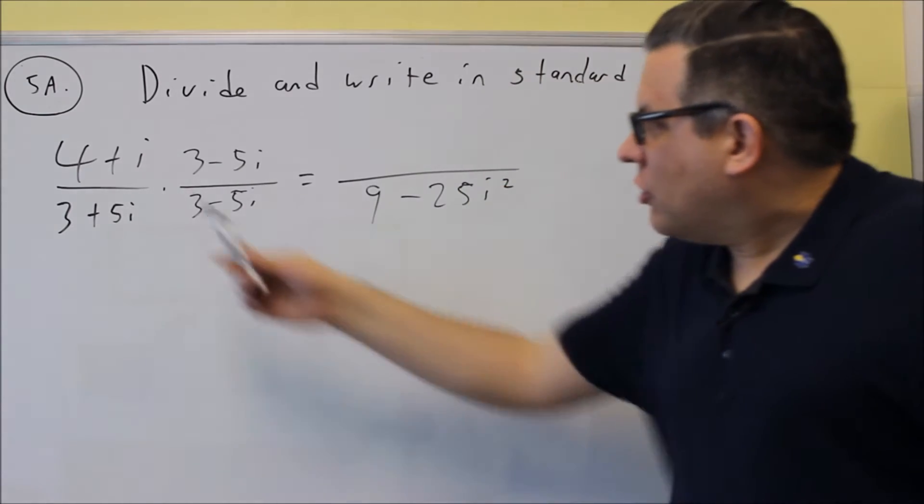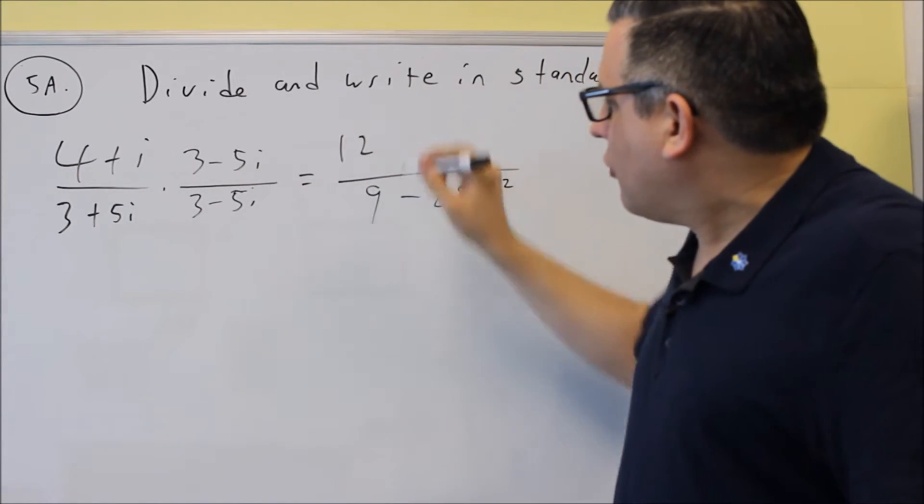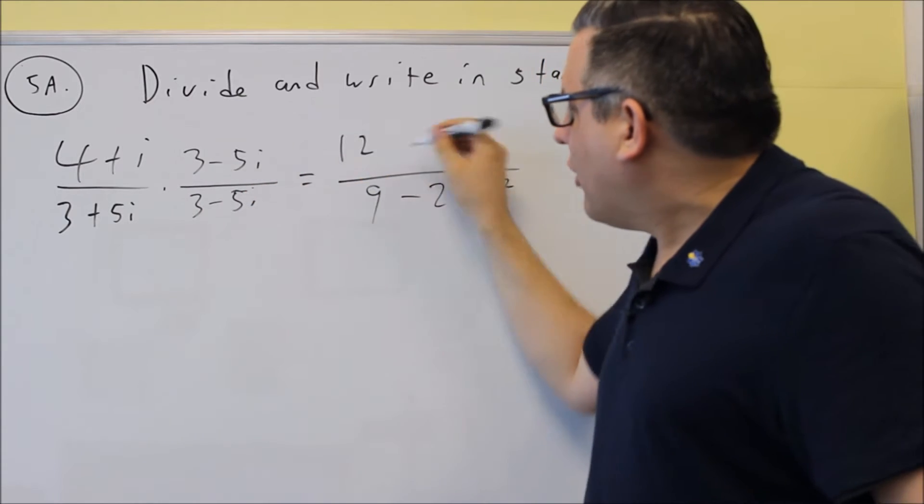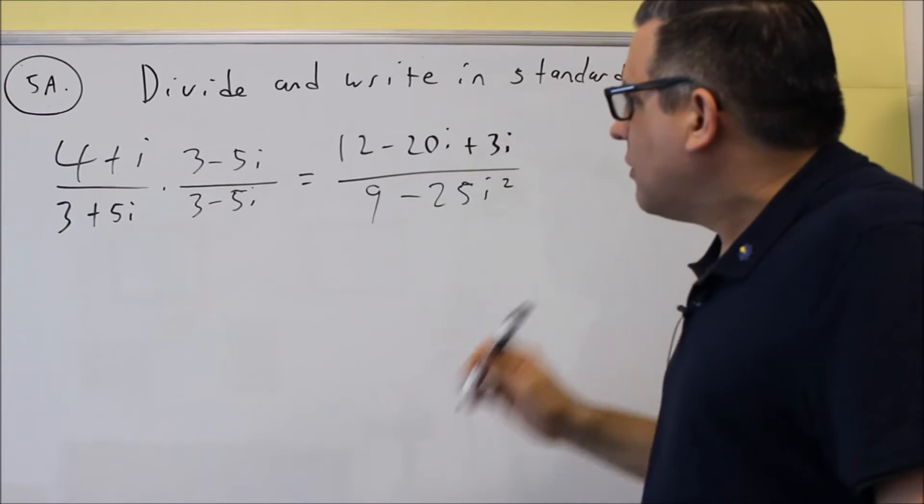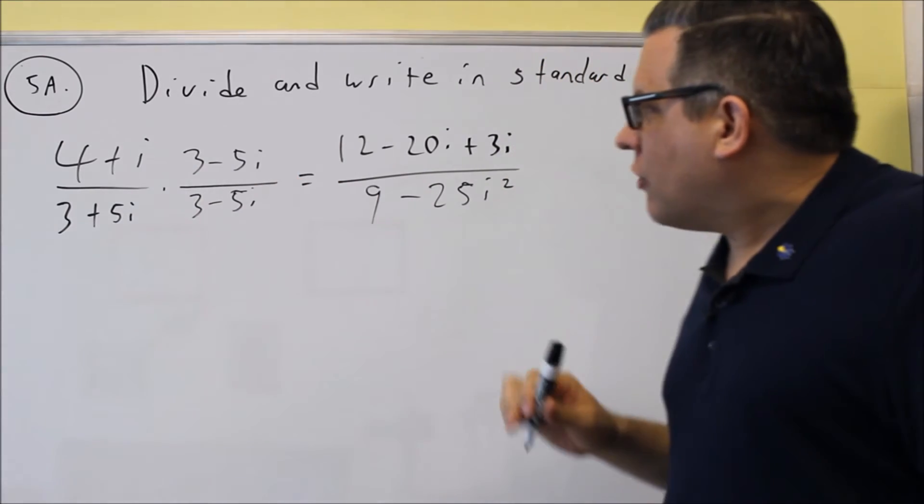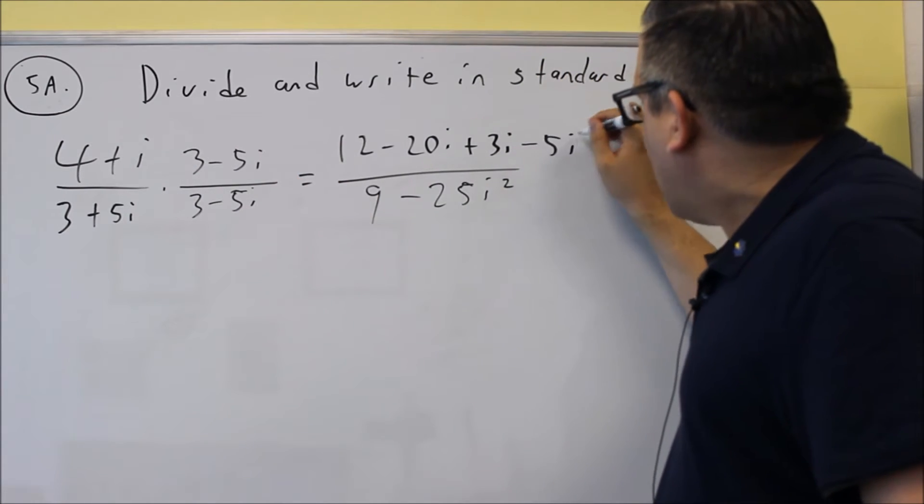Now for the top one, 4 times 3 is 12, 4 times negative 5i is negative 20i. The inside ones will do, that's plus 3i, then you do an i and a negative 5i will give you negative 5i squared.